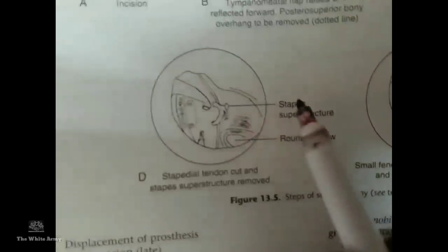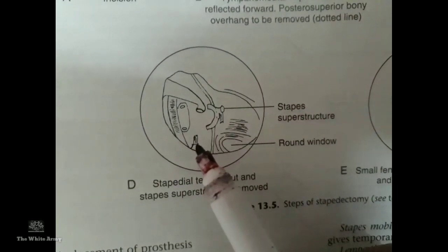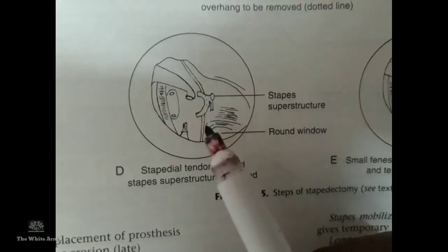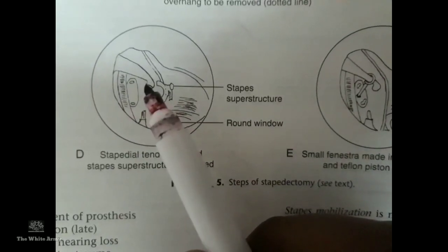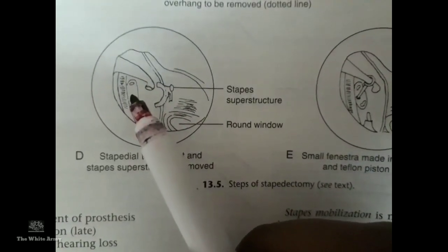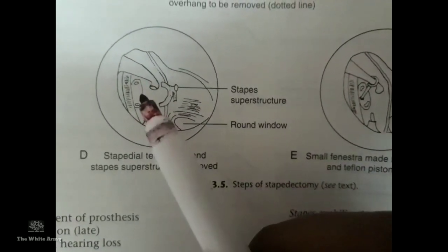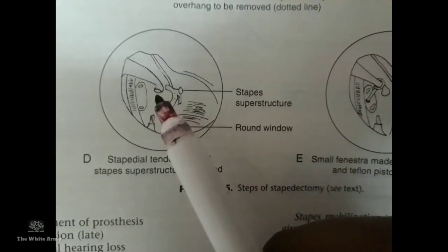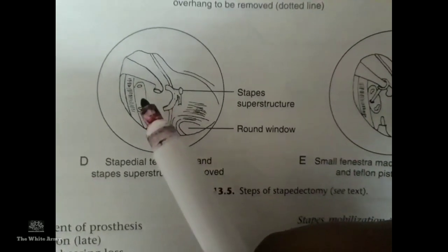After removal of the stapes superstructure, the incudostapedial joint is cut, the stapedial tendon is divided, and the stapedial foot plate is clearly visible. The facial canal and chorda tympani nerve are left untouched. If a hole is to be made in the foot plate, this is stapedotomy — the preferred operation. If the entire foot plate is involved, stapedectomy is performed.